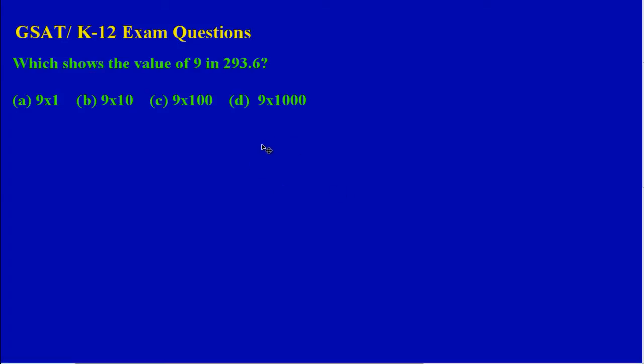Welcome to another question in our GSAT examination question series. We're asked which shows the value of the 9 in 293.6. Let me just quickly underline that digit. I'm speaking about the digit 9 in 293.6. Here we have some options: nine times one, nine times ten, nine times a hundred, and nine times a thousand.